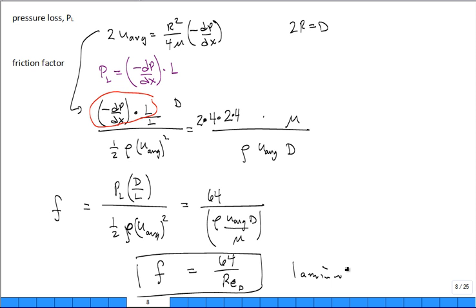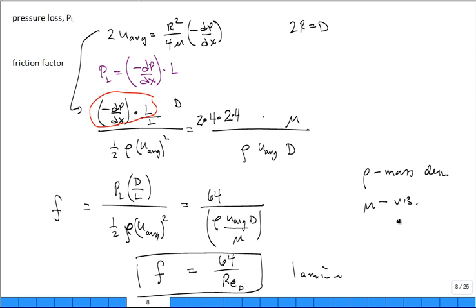In this formula, rho is the mass density of the fluid and mu is the dynamic viscosity of the fluid — both fluid properties that appear in the Reynolds number.